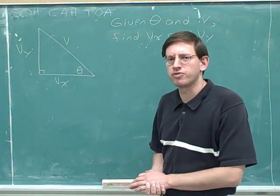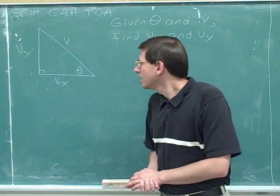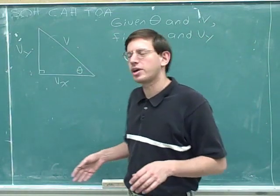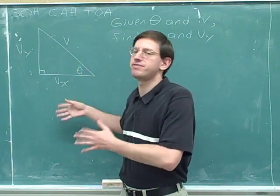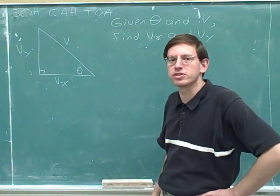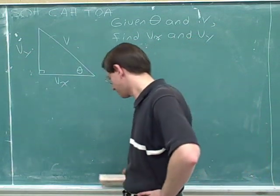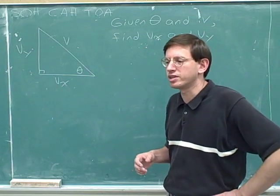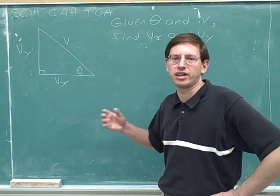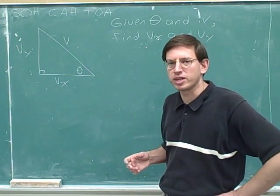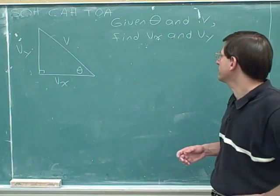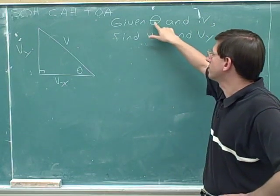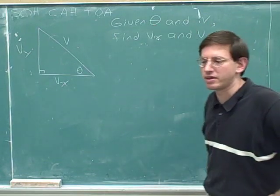How is this problem similar to what we've done before and how is it different? Well, obviously the way it's different is that I didn't actually give you any numbers — all I have done is put a bunch of variables in the diagram. The way it's similar is that we've been doing problems where you've been given a side and an angle. In this problem, you were given a side with length v and an angle of theta.